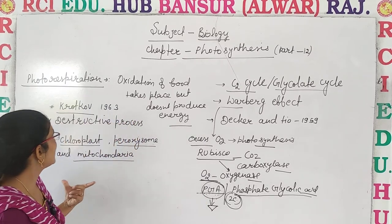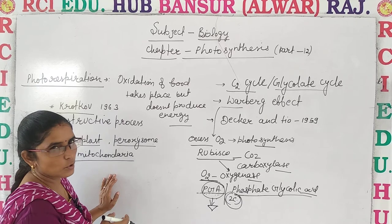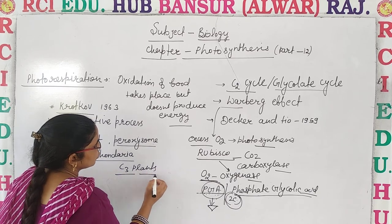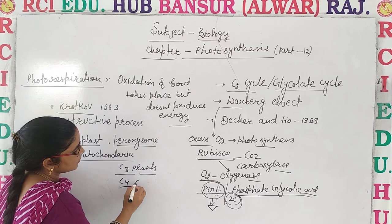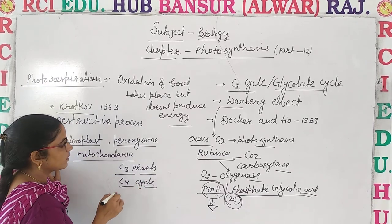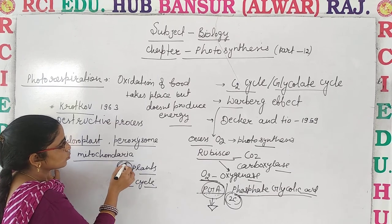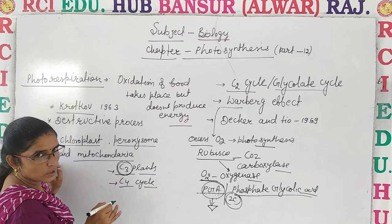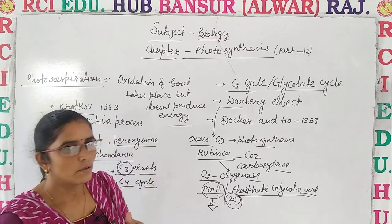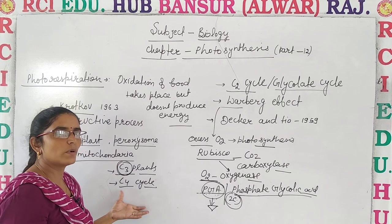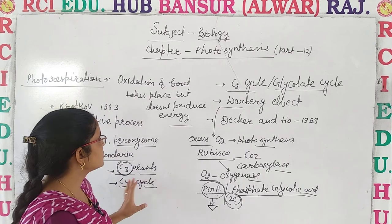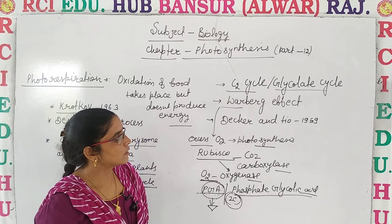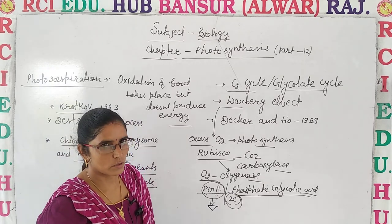So we have seen two things: photorespiration, which is a destructive process, and the C2 cycle — also known as the glycolate cycle. Photorespiration is a destructive process, same as the glycolate cycle. Please comment, like, and share the video. Subscribe also. Have a good day.